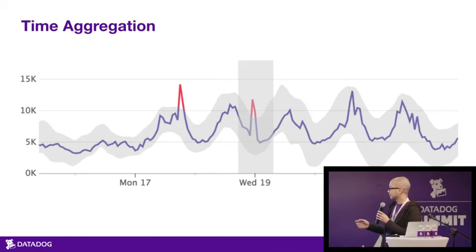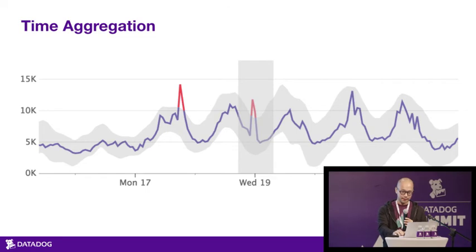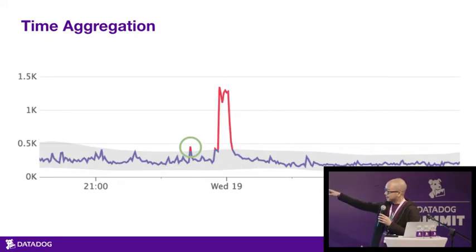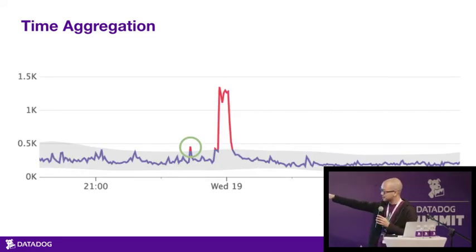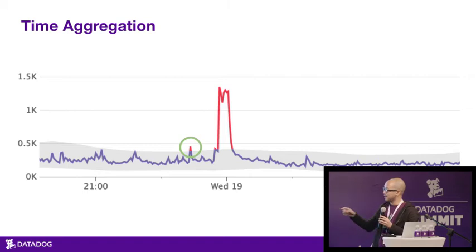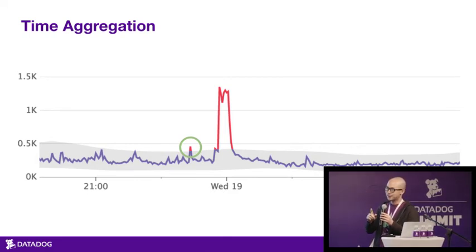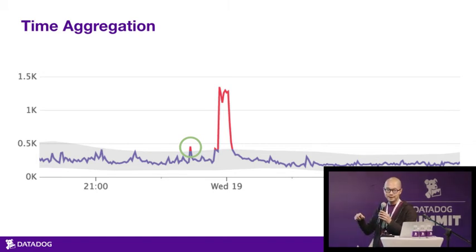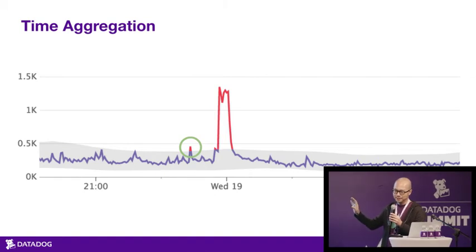Here we see a week with a red spike. Let's zoom in — we see that spike, but we also see a tiny spike right next to it that wasn't in the zoomed-out picture. Most people have the intuition that's okay: when looking at the zoomed-out view, each time point was an average or sum of the points around it, so that little spike got washed out. People are fine with that.